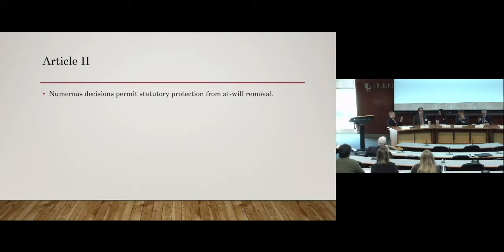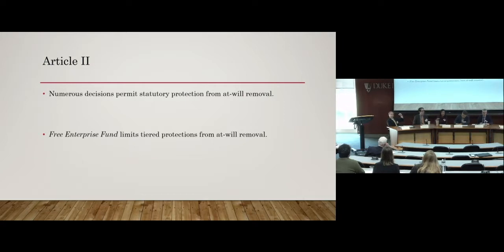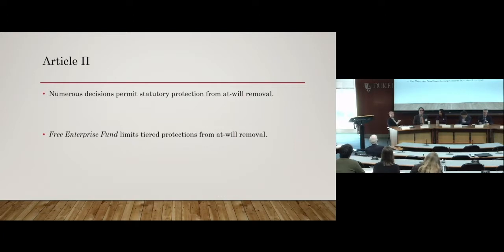With Article II, the Supreme Court has approved congressional action protecting executive officials from at-will removal. The wrinkle comes in a 2010 case called Free Enterprise Fund v. Public Company Accounting Oversight Board, often called PCAOB, which concerns tiered protections from at-will removal. The president could appoint and remove, for good cause, SEC commissioners. The SEC commissioners in turn could appoint and remove the PCAOB members, also for good cause. Between the president and the PCAOB members were two tiers of protection from at-will removal. The Court held these two tiers impeded the president's supervisory power under Article II and severed the second tier, meaning PCAOB members could be removed at-will by the SEC.